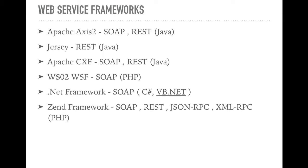To implement these web services we already have tools and software technologies that assist us in creating SOAP or REST-based web services — these are called web service frameworks. A framework is an essential supporting structure, and here the building object is the web service. Some of the most popular web service frameworks are Apache Axis2, which is written in Java and supports both SOAP-based and REST-compliant web services, and Jersey, which is also written in Java and supports REST-compliant web services.